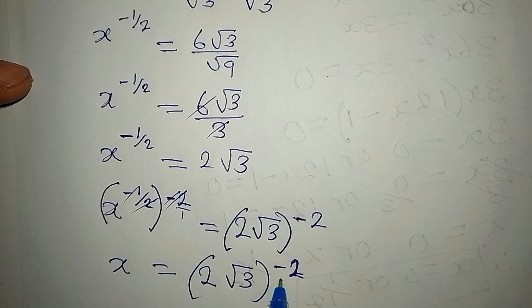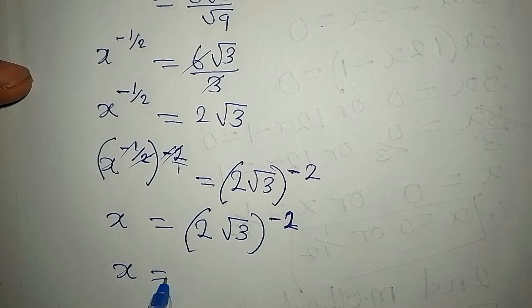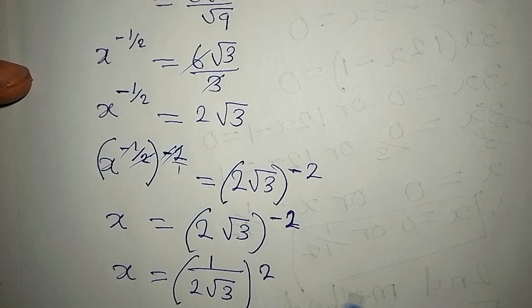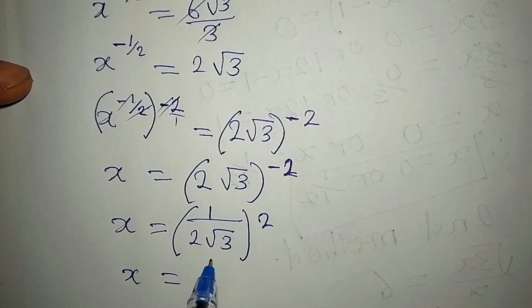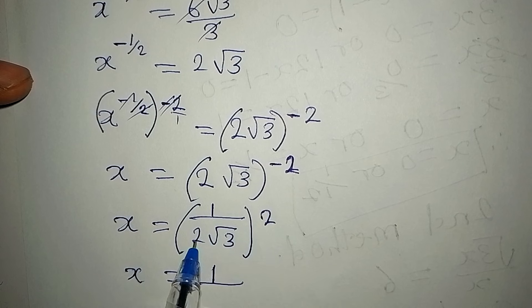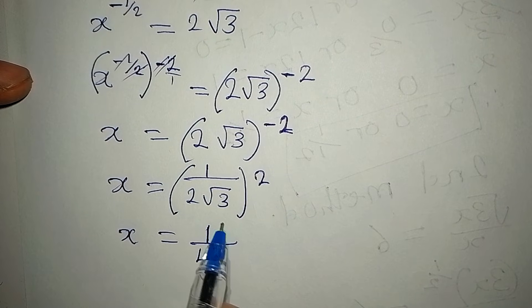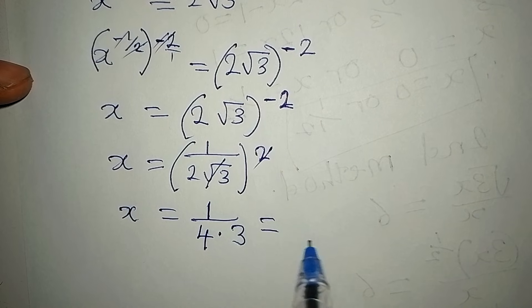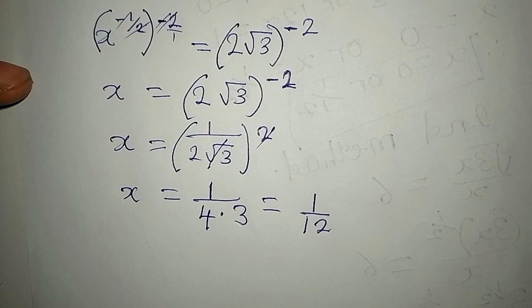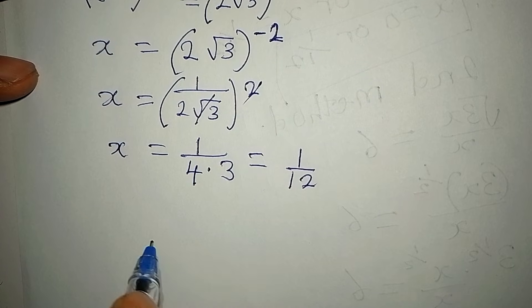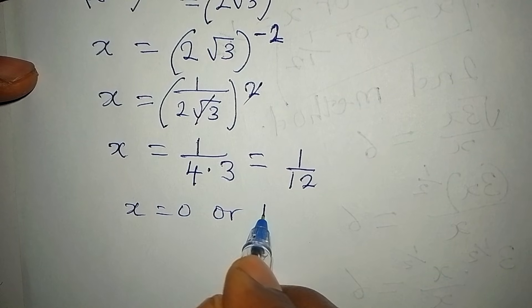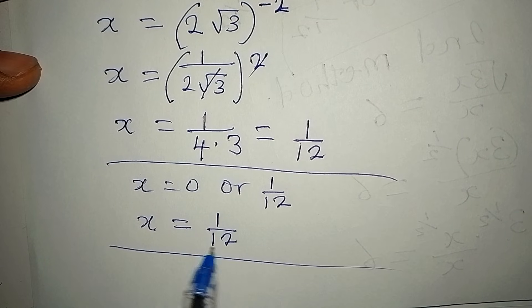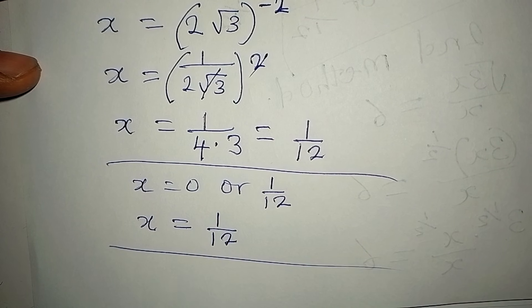To deal with the negative power, x equals 1 over (2 root 3) to the power of 2. Expanding: 1 squared is 1, 2 squared is 4, and root 3 squared cancels the root leaving 3. So 4 times 3 gives 12, meaning x equals 1/12. This matches what we got from the first method — x equals 0 or 1/12 — but the second method gives only x equals 1/12.